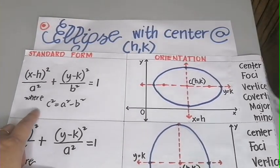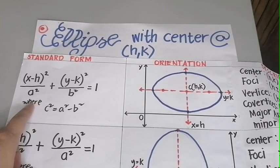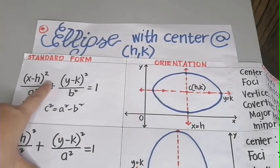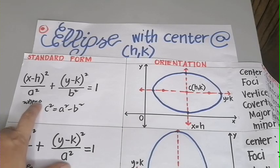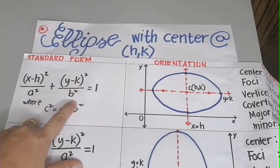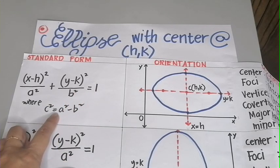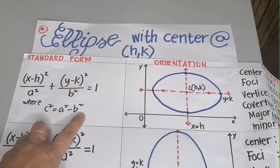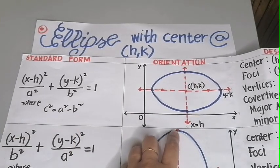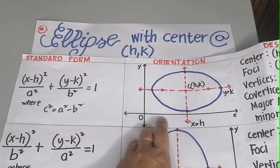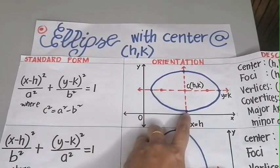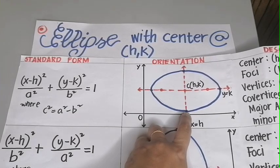The first standard form of an ellipse with center at HK is given by: x minus h, quantity squared, all over a squared, plus y minus k quantity squared all over b squared, equals 1, where c squared equals a squared minus b squared. Its orientation shows that the major axis is horizontal and the minor axis is vertical.